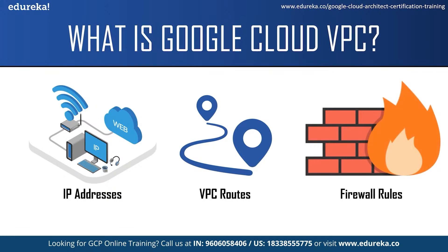Talking about firewall rules — each VPC network implements a distributed virtual firewall that you can configure. Firewall rules allow you to control which packets can travel to which destination. They let you allow or deny connections to or from your virtual machine instances based on configuration that you specify. When creating a VPC firewall rule, you must specify the VPC network and a set of configurations that define what the rule does. The configuration enables you to target certain types of traffic based on protocol, destination port, sources, and destination. You can create and modify VPC firewall rules using the Google Cloud Console, gcloud command-line tool, and REST APIs.